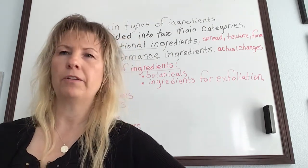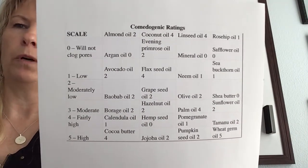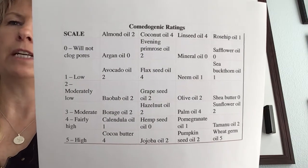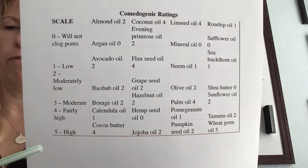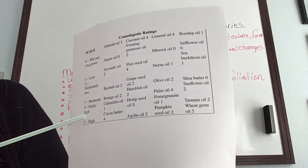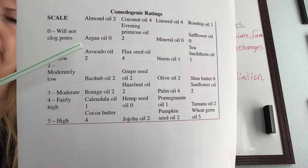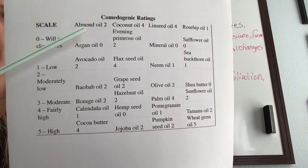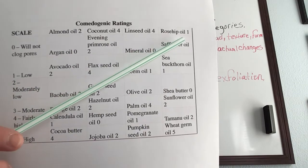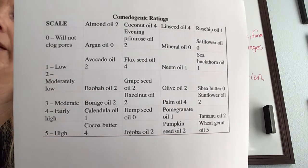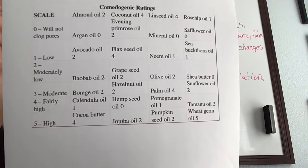Estheticians refer to comedogenic ratings to guide selection of botanical oils for certain skin types. On the comedogenic scale: 0 means it will not clog pores, 1 is very low, 2 is moderate, 3 is moderate, 4 is fairly high, and 5 is high. For example, almond oil is rated 2, coconut oil is 4, linseed oil is 4, and rosehip oil is 1. Rating scales available online may differ slightly based on how updated they are.